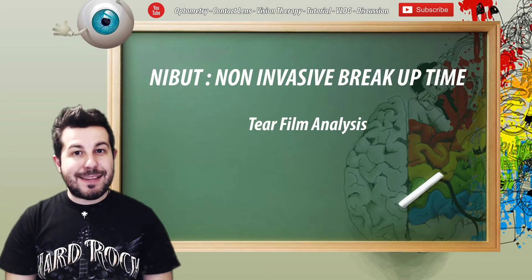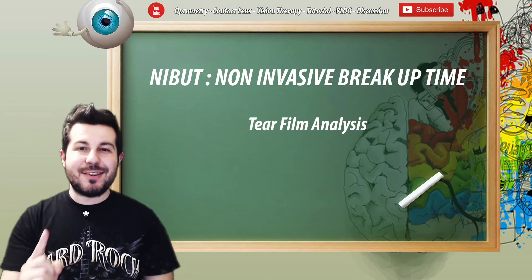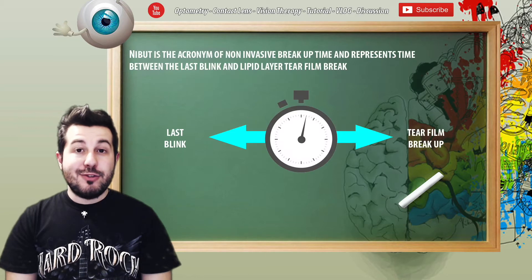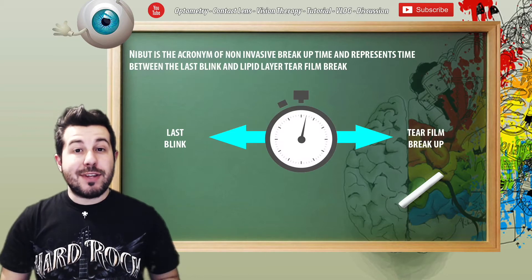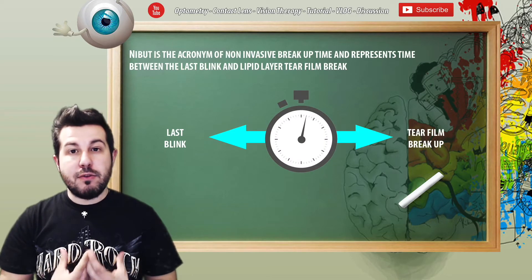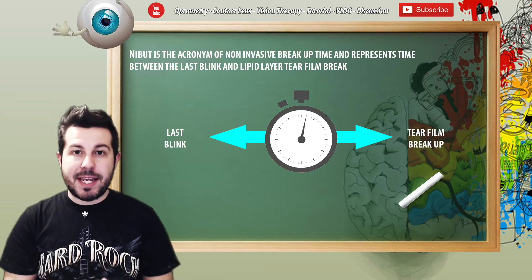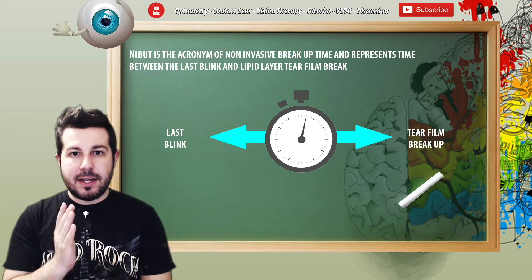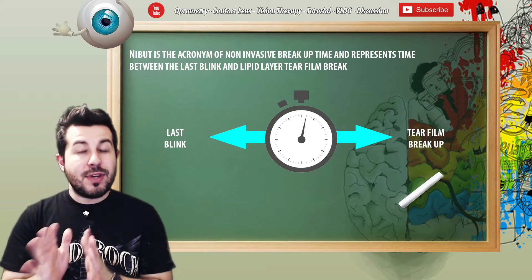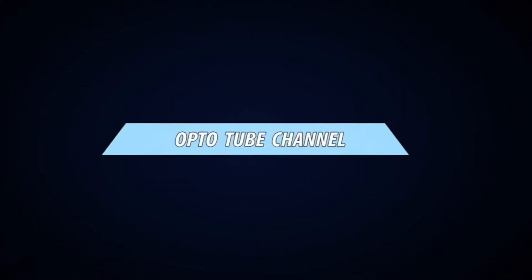Hi to everybody and welcome back to OptiTube channel, the first Italian optometry YouTube channel. Today we are going to talk about NIBUT, which is a test that we can use to evaluate tear film in its lipid component from a non-invasive and quantitative point of view.